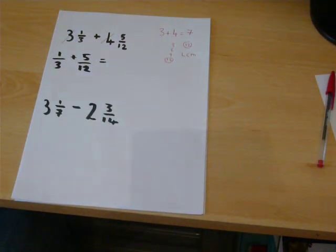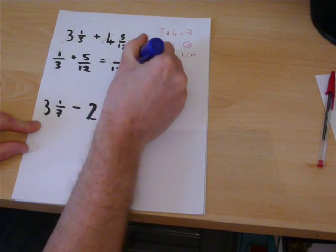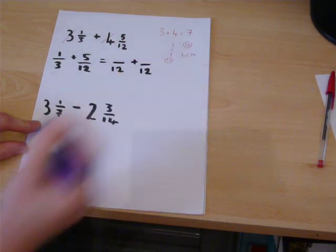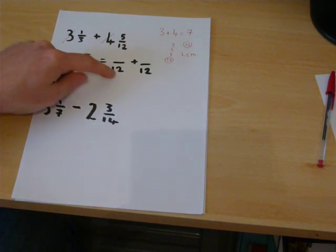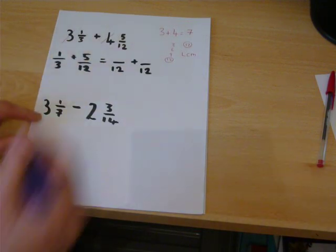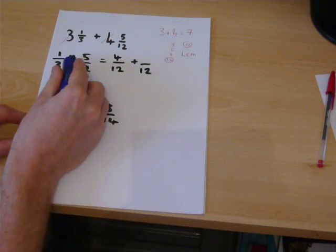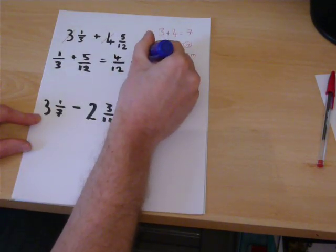So we put them both over 12. That occurred 4 times. So times the top by 4. We get 4 twelfths. We have 5 twelfths. That's not changed.